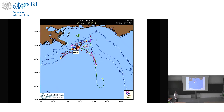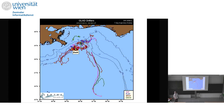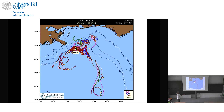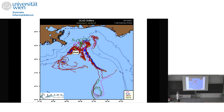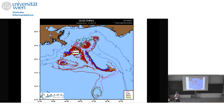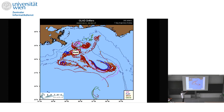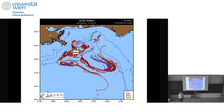Let's look at a movie of the trajectories. We called the transport path the 'highway to hell' — the drifters went out of the area too quickly. Here are the big eddies — that's a big eddy right there.